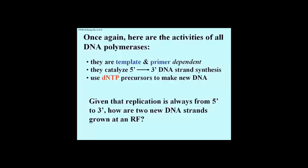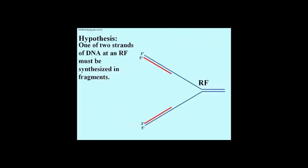We know that all DNA polymerases catalyze 5' to 3' strand growth, and that no DNA polymerase can synthesize DNA 3' to 5'. Since this is true, how can we rationalize replication of both strands against their templates at a replication fork? The only reasonable hypothesis was that while one strand could be synthesized continuously, as the replication fork keeps unwinding, at least one DNA strand would have to be synthesized in pieces or fragments that would later be stitched together.